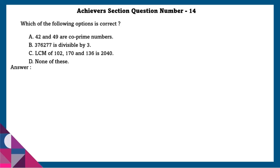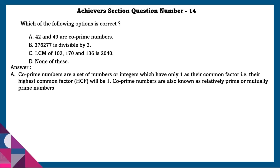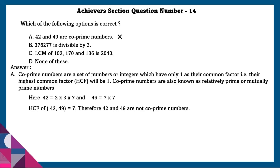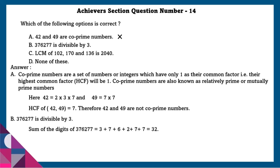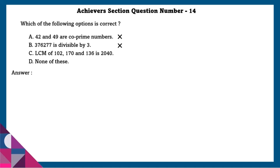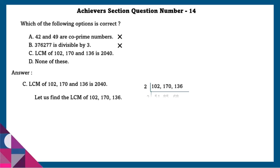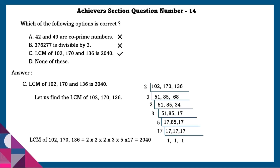Achiever section question number 14: Which option is correct? A: 42 and 49 are co-prime numbers. Co-prime numbers have only 1 as their common factor, i.e., HCF equals 1. Here, 42 equals 2 times 3 times 7 and 49 equals 7 times 7, so HCF of 42 and 49 is 7 — therefore they are not co-prime. B: A number is divisible by 3 if the sum of its digits is a multiple of 3; here the sum is 32, which is not divisible by 3. C: LCM of 102, 170, and 136 is 2040 — this is correct. So option C is the correct answer.